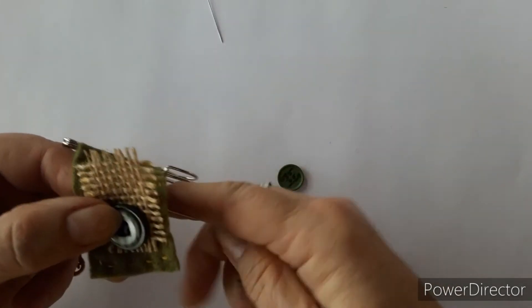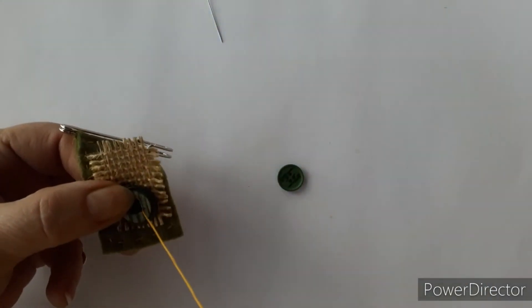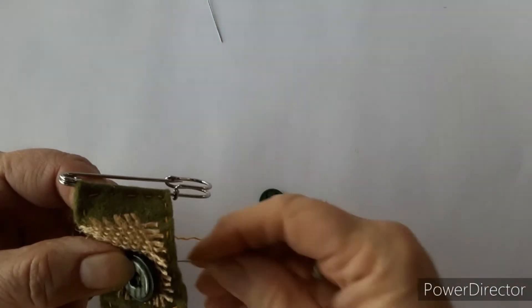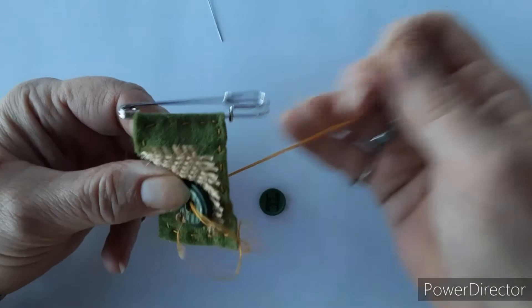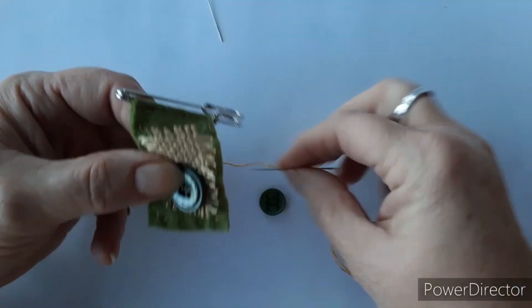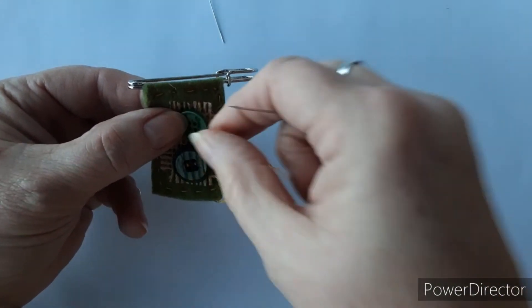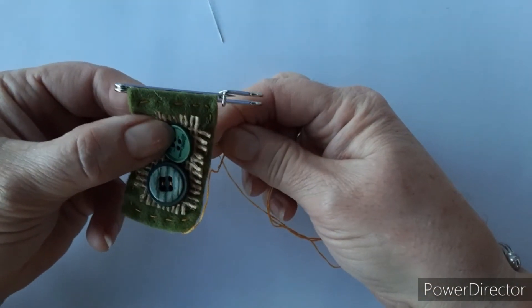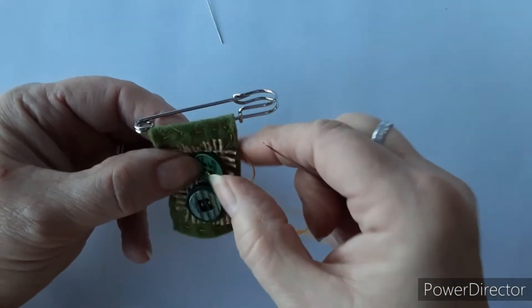Put your finger over the button, hold it in place. Come through with your stitches and through the holes in the button to secure. And then come through with your stitches to secure them.